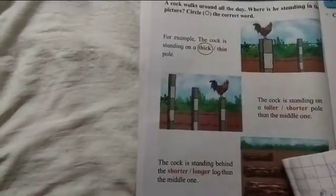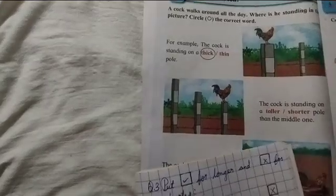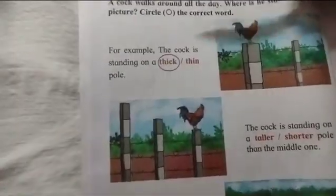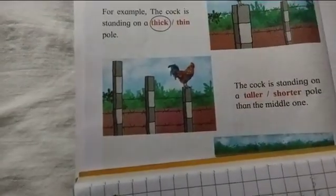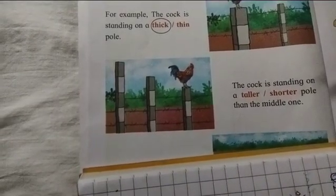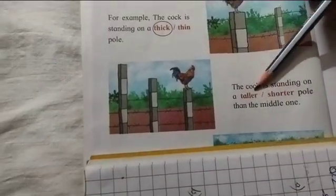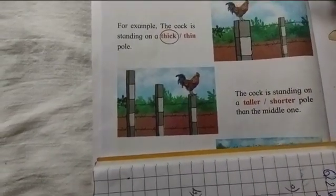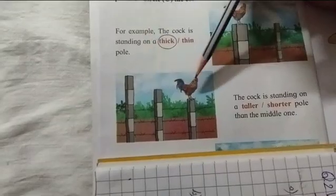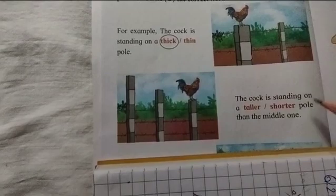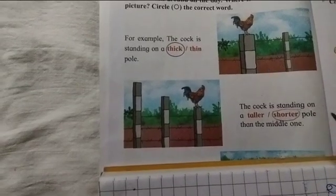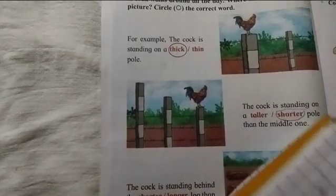Now we will move on to the next picture. The first is already done. Here you have to look at this picture. Again the question is the same — you have to put the circle on the correct word. Now in the next picture, three poles are given. The cock is walking around all day. We have to find whether the cock is standing on a taller or shorter pole than the middle one. So here the cock is standing on the shorter pole.